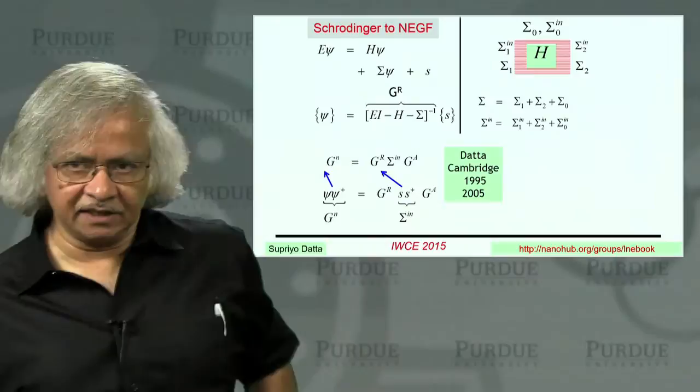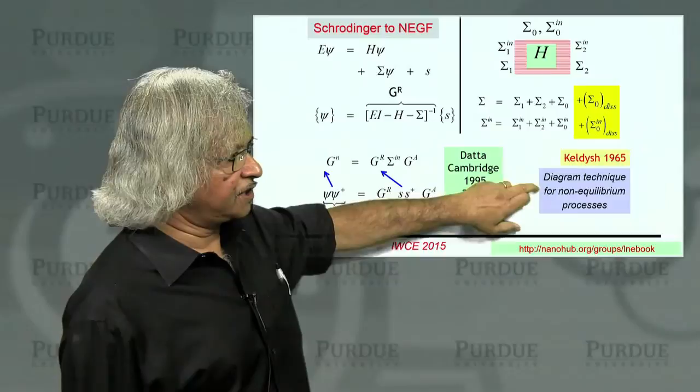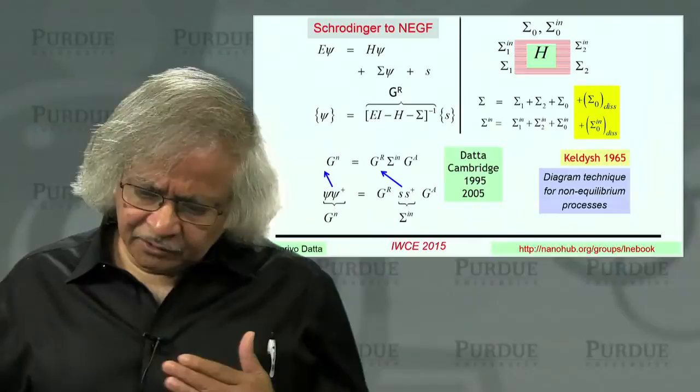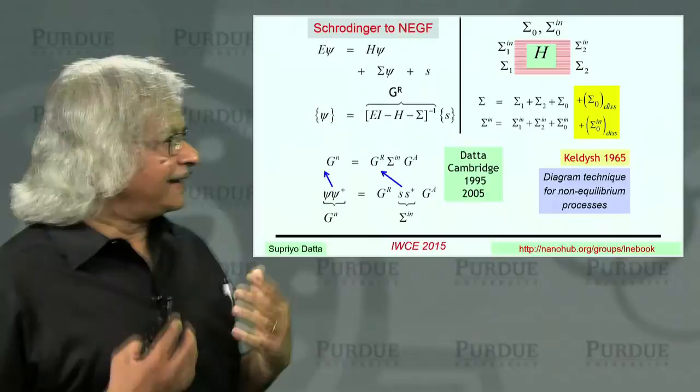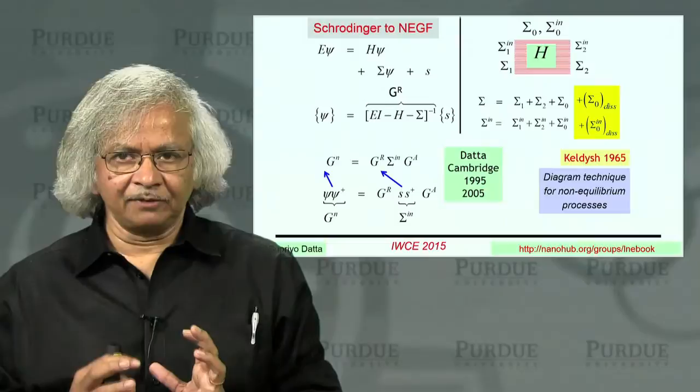But this approach, though, is very different from what you'd normally see in the literature, which is based on this classic work from the 60s, which uses this many-body perturbation theory. The title of the paper by Keldysh is this diagram technique for non-equilibrium processes. And the reason you generally need this many-body theory is because the general view is that resistance involves many-body phenomena, where an electron interacts with the surroundings and gives up energy to the surroundings. And to describe that properly, you need this many-body theory.